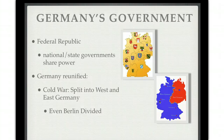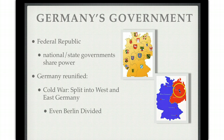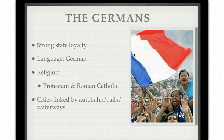Germany's government is known as the Federal Republic, which is similar to the United States in that the national and state governments share power. In 1989, as the Cold War was coming to an end, Germany was being reunified. There was a West Germany under a democratic government and an East Germany that followed the Soviet Union. Even the capital city of Berlin was divided — you've probably heard of the Berlin Wall. There are some challenges now that East and West Germany have been reunited. Germans have a strong state loyalty; the language is German, and the religion is a mix of Protestantism and Roman Catholicism. Cities are linked by the Autobahn, rails, and waterways.